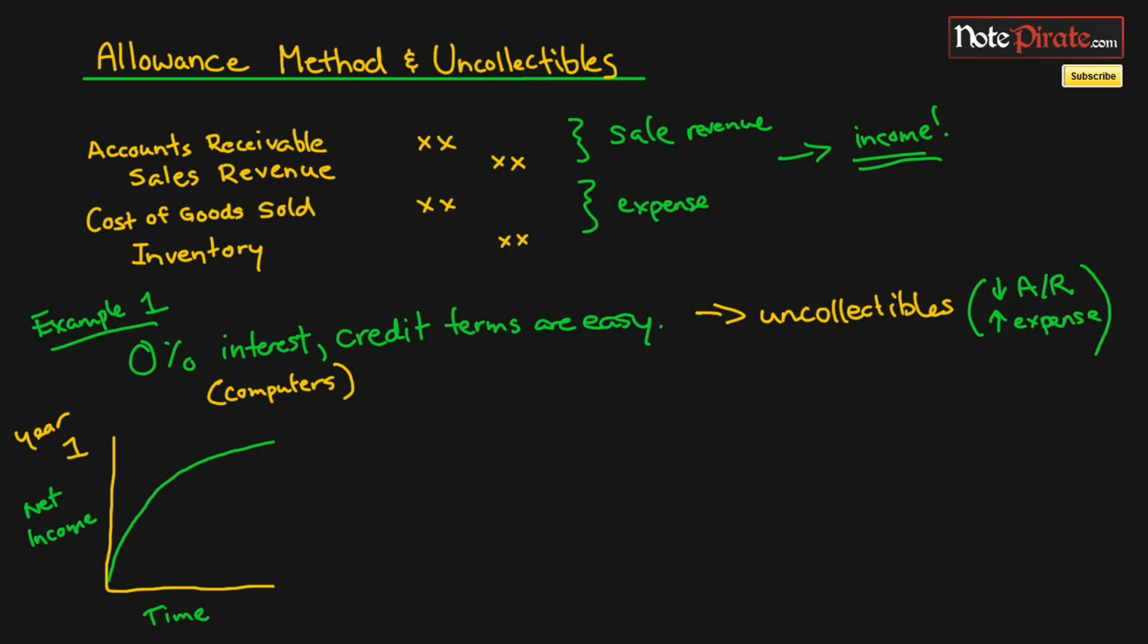Our expense will go up. You can kind of guess what's going to happen to net income. What does expense do to net income? It actually causes it to drop. So in the second year, it may create a dramatic drop in earnings.